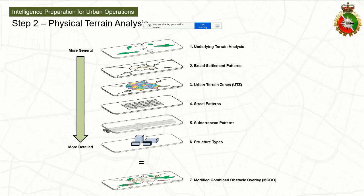After doing the underlying terrain analysis, we look at the broad settlement patterns — things like satellite pattern, hub and spoke, linear patterns — because those will have important impact on how forces maneuver around and through urban areas.